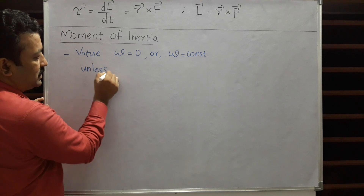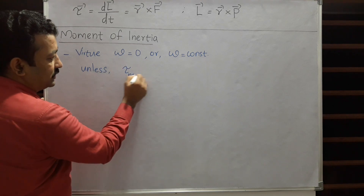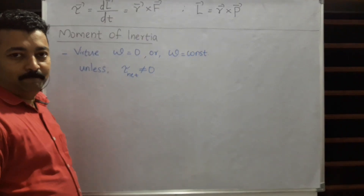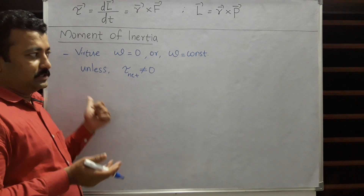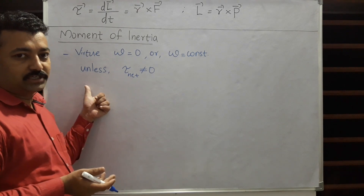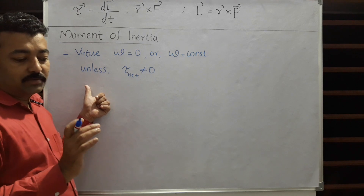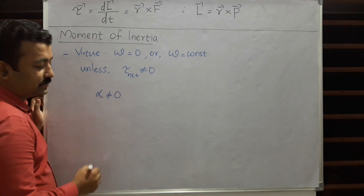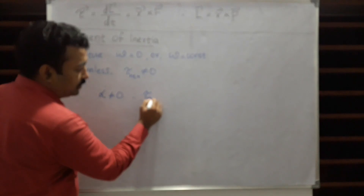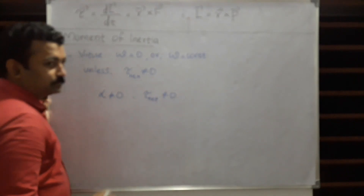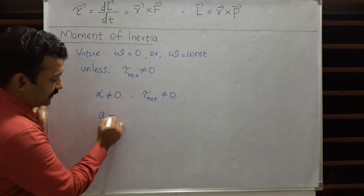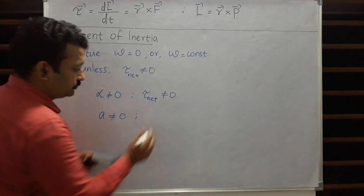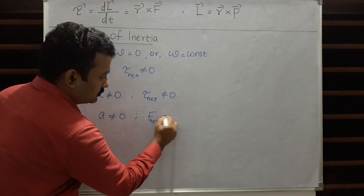Unless net torque is not equal to zero. This is actually defining Newton's first law in rotational dynamics. If you want angular acceleration — that is, if alpha is not equal to zero — then tau net should not be equal to zero. Just like in translation: if acceleration a is not equal to zero, then net force f must not be equal to zero.